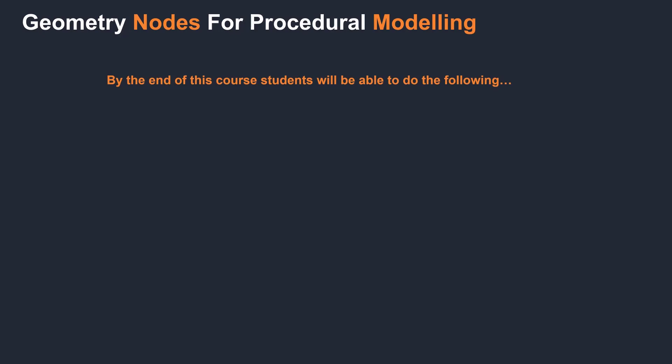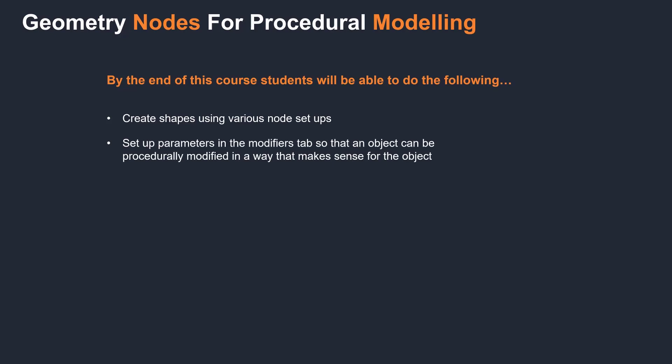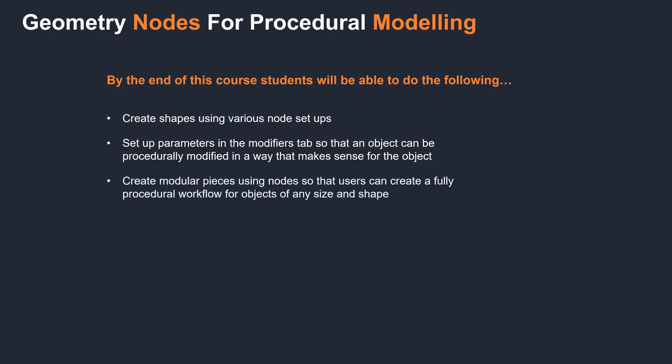By the end of this course, students will be able to do the following: they will be able to create shapes using various node setups, set up parameters in the Modifiers tab so that an object can be procedurally modified in a way that makes sense for that object, and create modular pieces using nodes so that users can create a fully procedural workflow for objects of any size and shape.